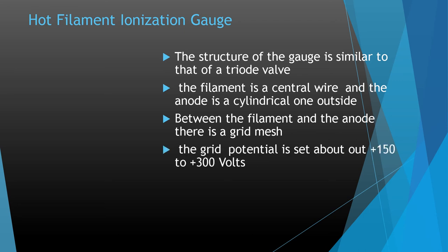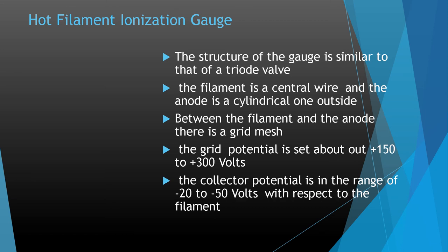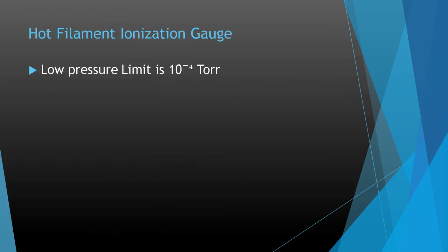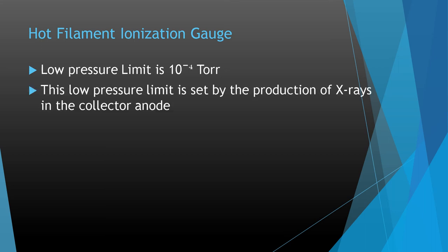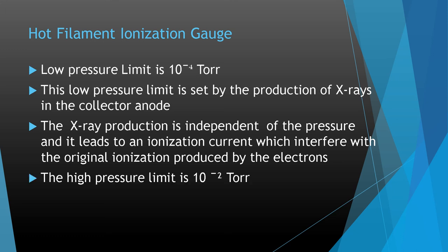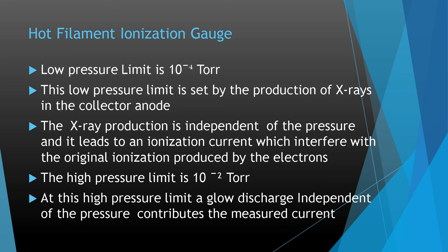The grid potential is set at about +150 to +300 volts. The collector potential is in the range of −20 to −50 volts with respect to the filament. The lower pressure limit is 10⁻⁷ Torr, which is set by the production of X-rays at the collector anode. The X-ray production is independent of pressure and leads to an ionization current that interferes with the original ionization produced by the electrons. The high pressure limit is 10⁻² Torr, at which a glow discharge independent of pressure contributes to the measured current.